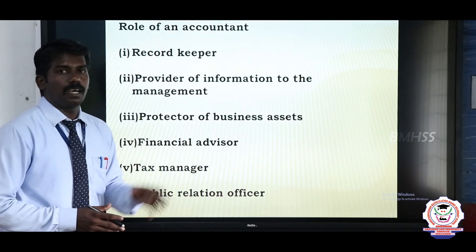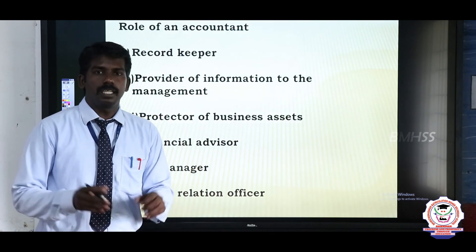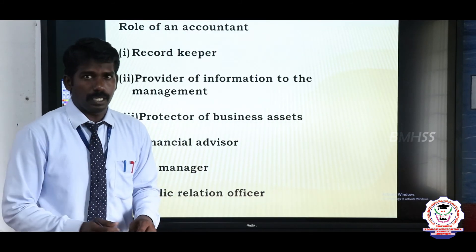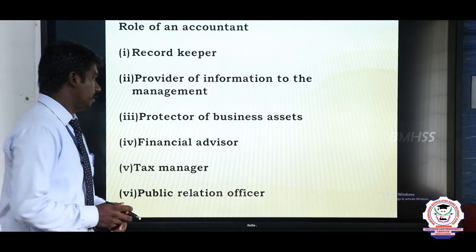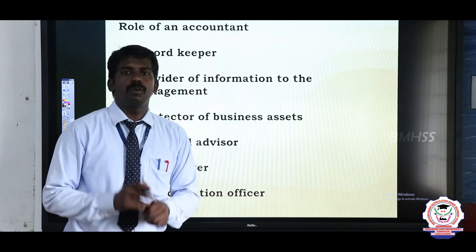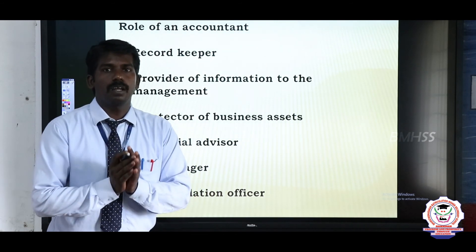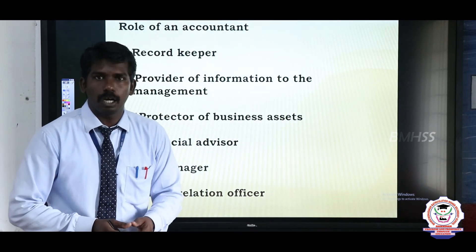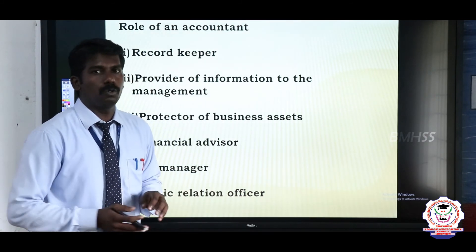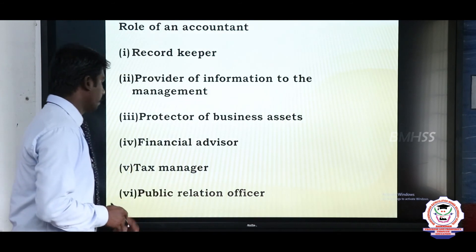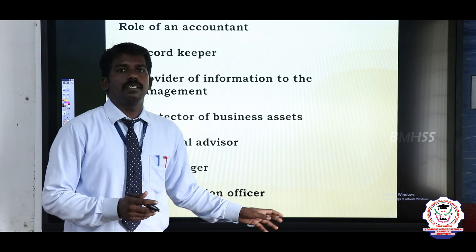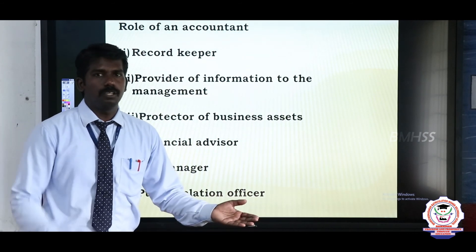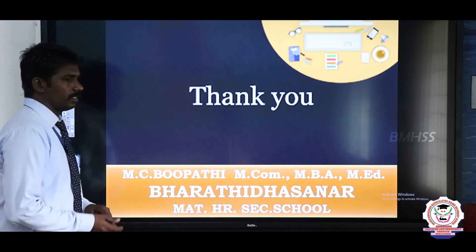Next, financial advisor. An accountant knows about the financial condition of the company and sometimes gives advice to the management on what should and should not be done. Next, tax manager — the accountant knows how much tax should be paid for the sale of goods and services, and how much tax should be paid to the government for the company's turnover. Last, public relations officer — whenever information about the company is needed, the accountant reveals it to both internal and external users.